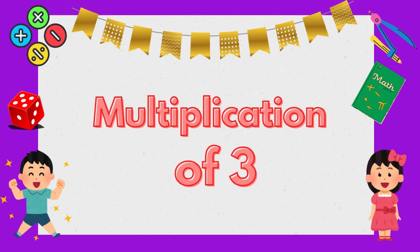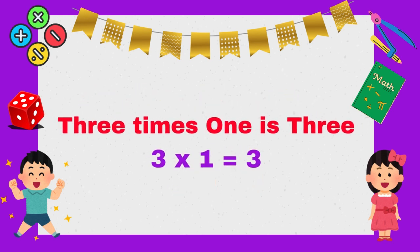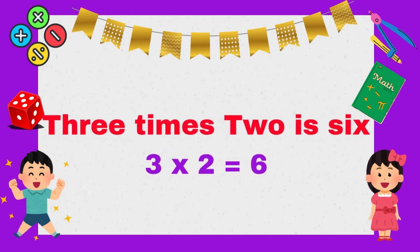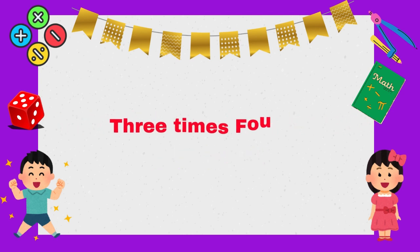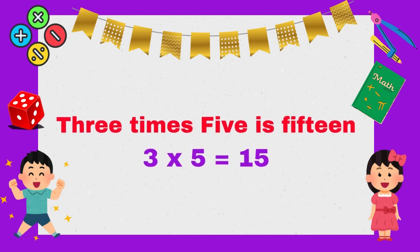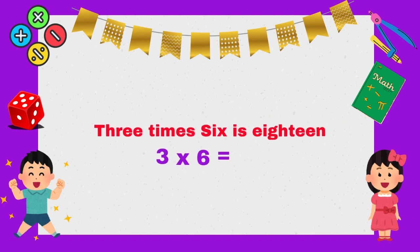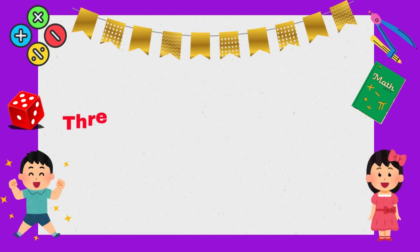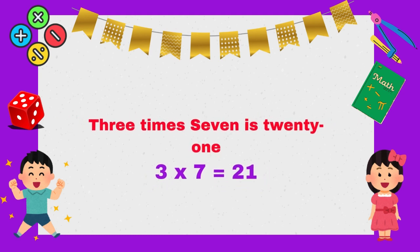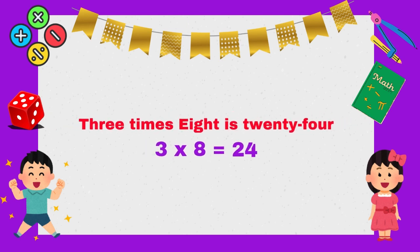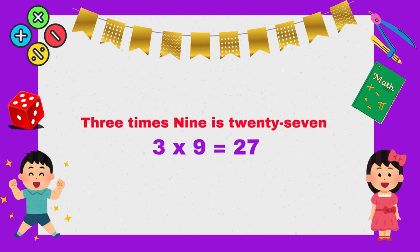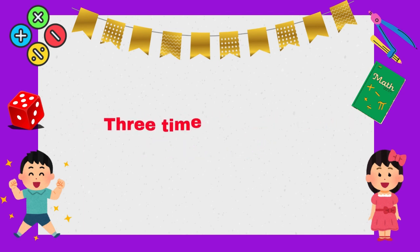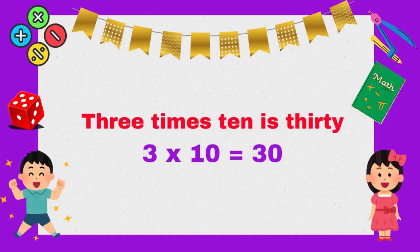Let's learn! Table of Three. 3 times 1 is 3. 3 times 2 is 6. 3 times 3 is 9. 3 times 4 is 12. 3 times 5 is 15. 3 times 6 is 18. 3 times 7 is 21. 3 times 8 is 24. Three times nine is twenty-seven. Three times ten is thirty.